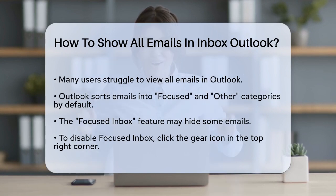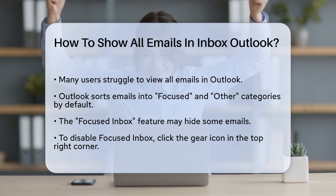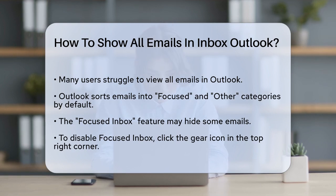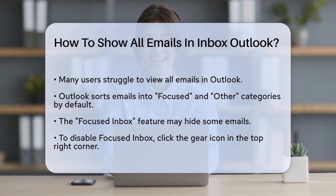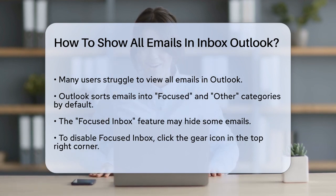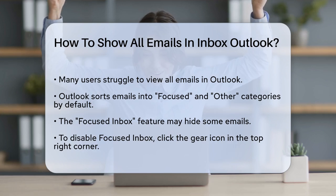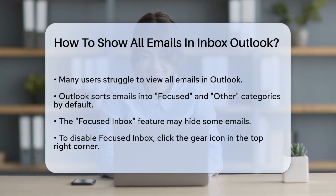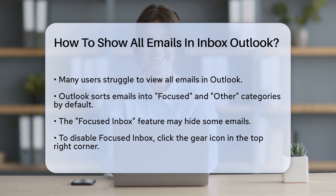First, you need to understand that Outlook often sorts your emails into different categories by default. This can be helpful, but sometimes it hides emails you need to see. One of the main reasons you might not see all your emails is due to the Focused Inbox feature. When you open Outlook, you'll notice your emails are divided into Focused and Other sections. The Focused Inbox shows what Outlook thinks are your most important emails, while the Other section contains the rest. To see all your emails in one view, you need to turn off this feature.